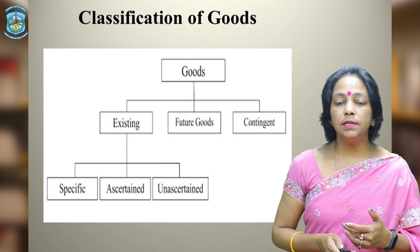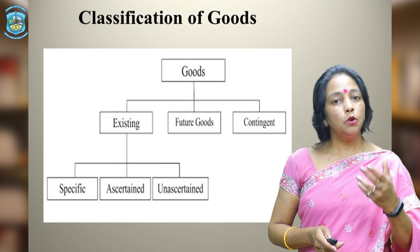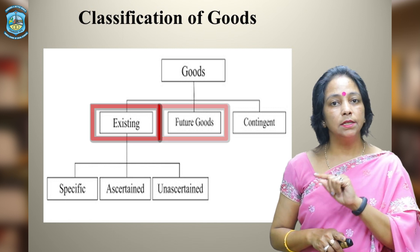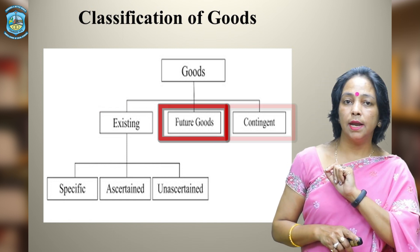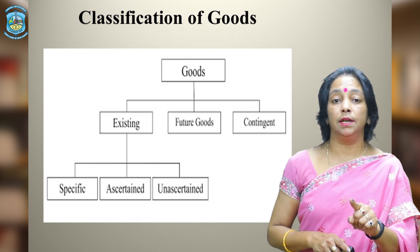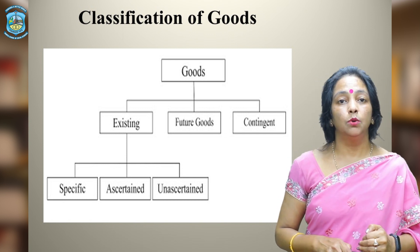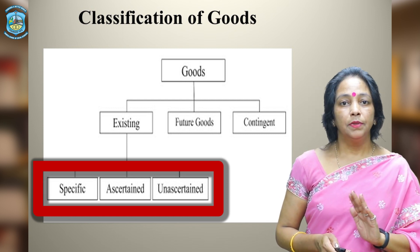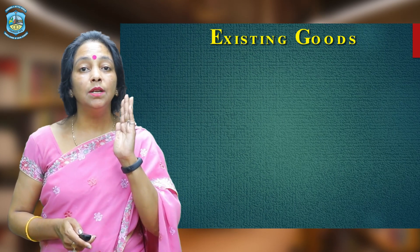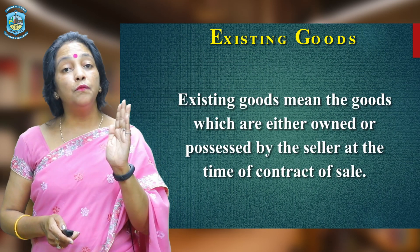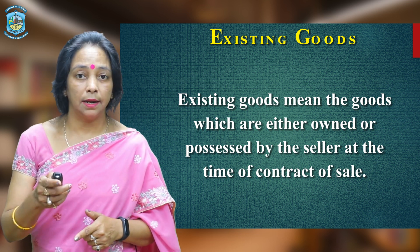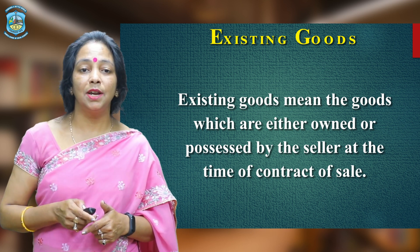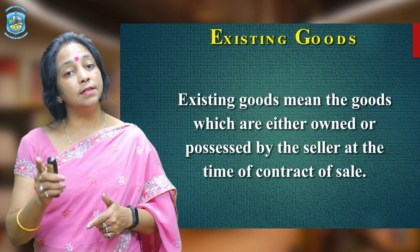Goods may be further understood in the following classification. Goods are divided into three categories: number one is existing goods, number two is future goods, and number three is contingent goods. Existing goods are further divided into three parts: specific, ascertained, and unascertained. Existing goods mean the goods which are either owned or possessed by the seller at the time of the contract of sale.